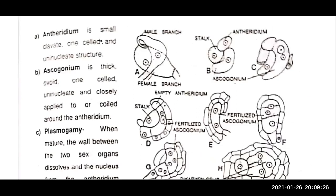The anthridium is a small, elongated, one-celled and uninucleate structure. The ascogonium is thick, ovoid, one-celled and uninucleate, and is closely applied to or coiled around the anthridium.